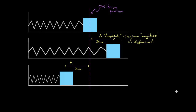Now there's another term you gotta get used to, and that's the period. The period is represented with a capital T. Why is the period represented with a capital T when there's no T in the word period? T is kind of like time, so T might stand for time. What the period means is the time required for an entire cycle.